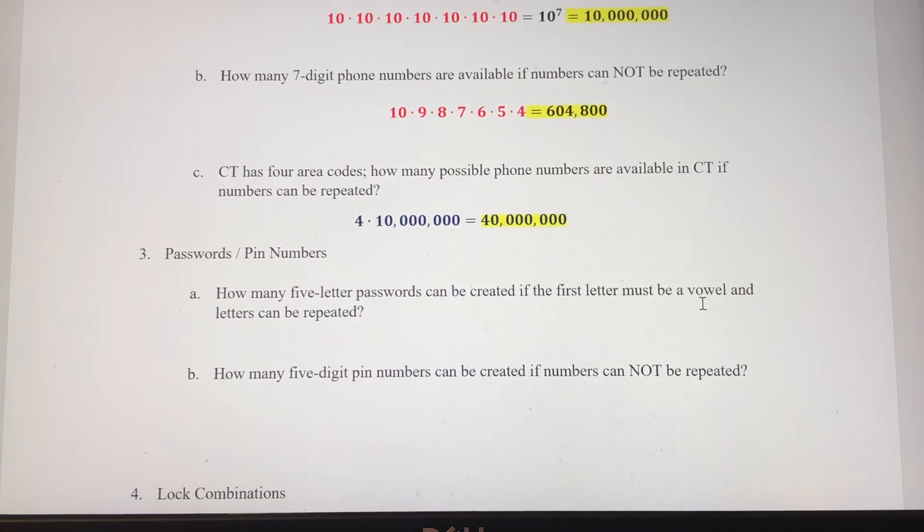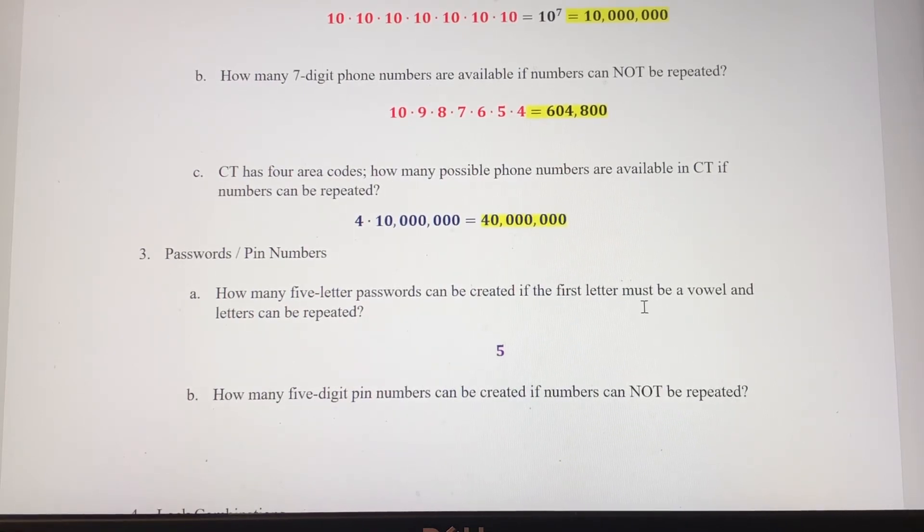So for us, we're talking about A, E, I, O, and U there. We also say that letters can be repeated. So the first letter has to be a vowel, so there's only five possibilities in that first spot. So then our next four letters, anything goes, so we've got 26 options for each of those. So we've got five times 26 to the fourth power, which is 2,284,880.